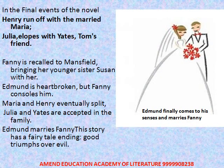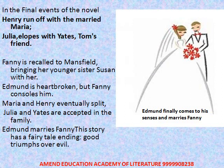Until now the novel's events are unresolved, with no major twist. Then the final events begin: Henry runs off with the married Maria, and Julia, upset by her sister's act, elopes with Yates, one of Tom's friends. Fanny is called back to Mansfield Park to help deal with the newly deteriorated situation, and she brings her younger sister Susan with her. By this time, Edmund has discovered Mary's true nature — she was after him only for the property. Heartbroken, he is consoled by Fanny. Maria and Henry eventually split, and Maria goes to the continent to live with the villainous Mrs. Norris.